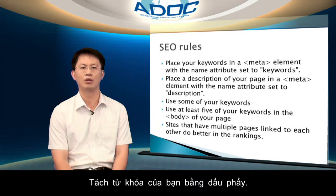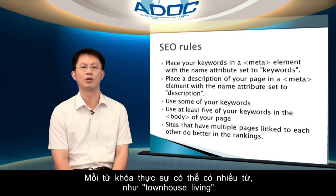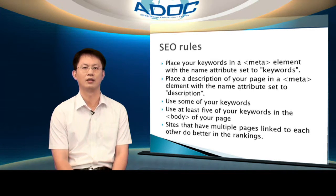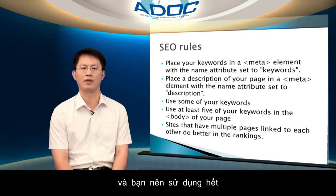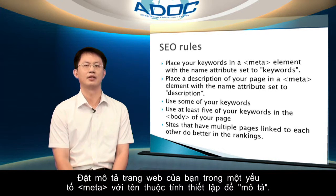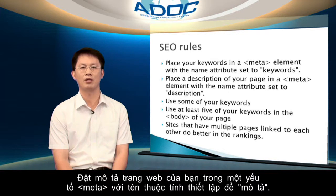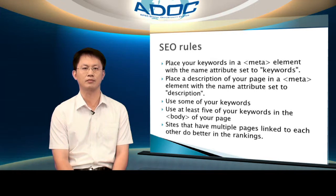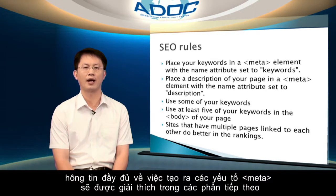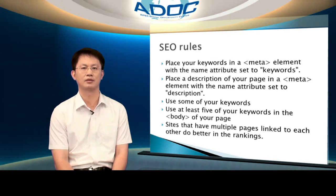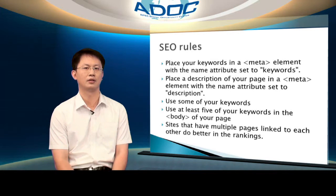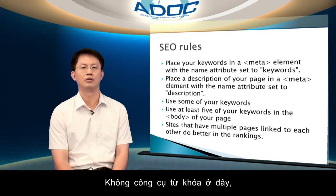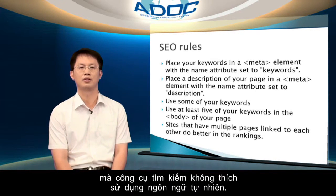Separate your keywords with commas. Each keyword can actually be multiple words, such as "townhouse living". You are allowed 1,000 characters of keywords, and you should use most of them. Provide a description of your page in the meta elements with the name attribute set to description. You are allowed 250 characters of description, and you should use most of them. Do not stuff keywords here, which search engines don't like — use natural language.